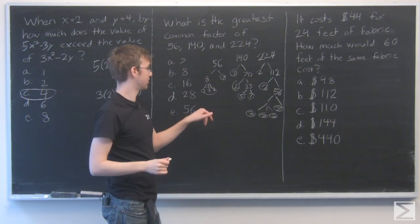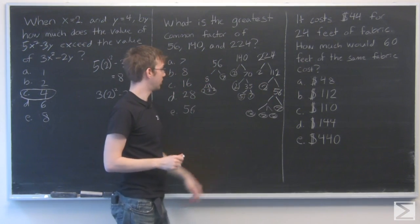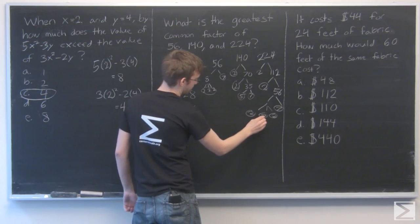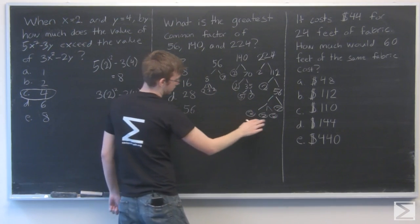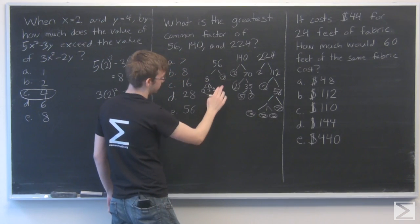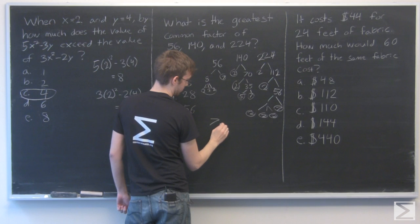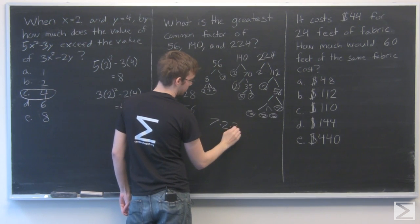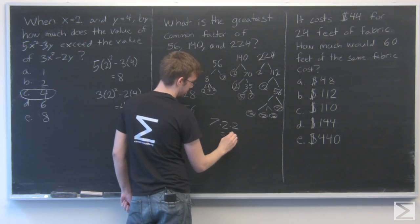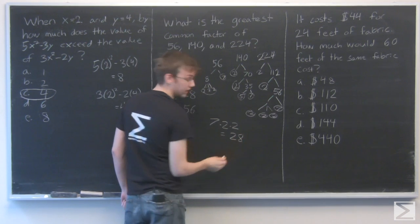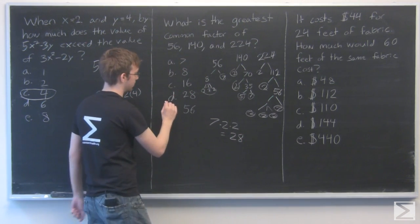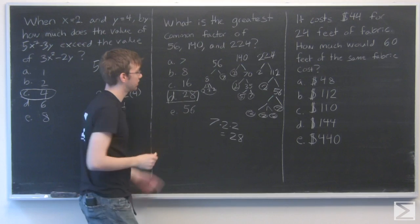All right, so now we look at what is shared between all of these. We have a 7, a 7, a 7, 3 2s, 3 2s, 2 2s. So 7 times 2 times 2. That's equal to 28. So the answer is D, 28.